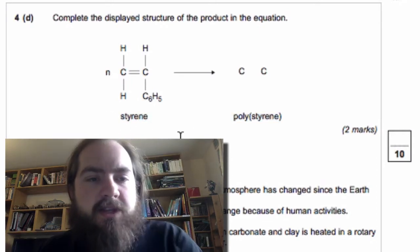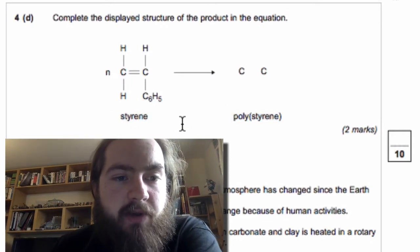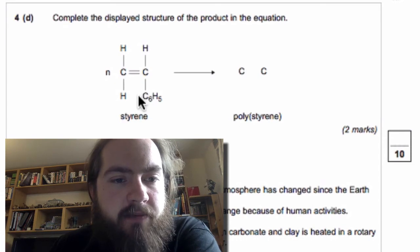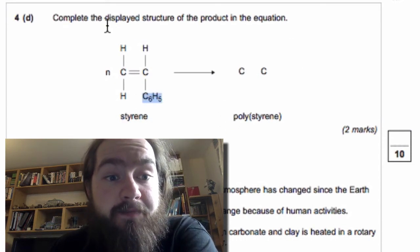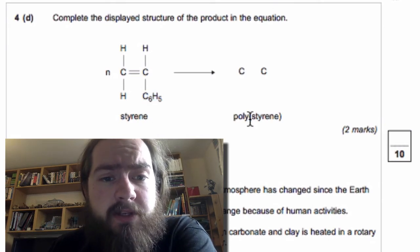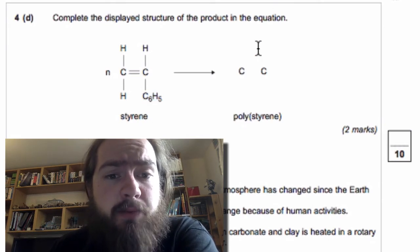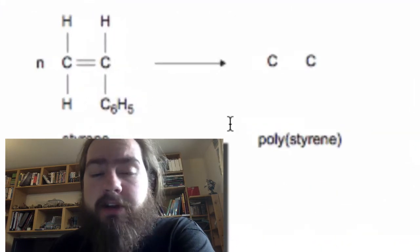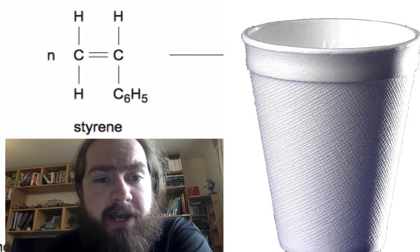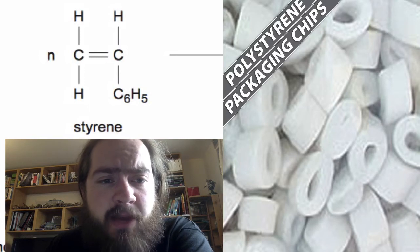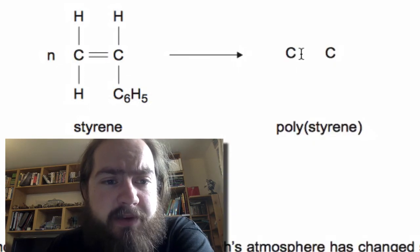For D: Complete the displayed structure of the product in the equation. Here we've got styrene. You won't have encountered styrene before, but it is just another monomer. And we've got polystyrene. Poly meaning many, so this is your polymer, your plastic. Polystyrene you will have encountered all over the place—we use it in cups, we use it in packaging. So the first thing that's going to happen in polymerization is this double bond here is going to break, so instead of a double bond we're going to have a single bond between the two carbons.